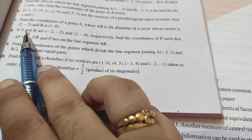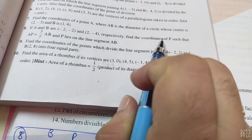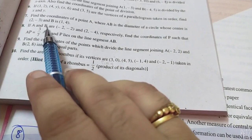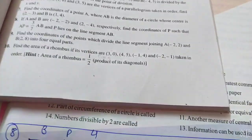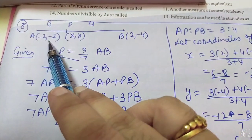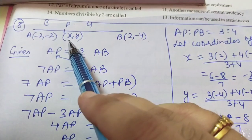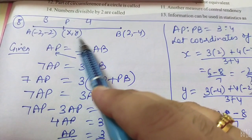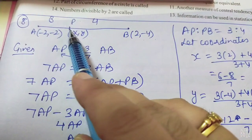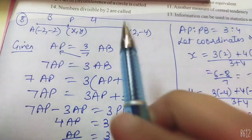Next है 8th question. 8th question में given है: आपको AB दो points हैं जिनके coordinates given हैं A(-2, -2) और B(2, -4), और बीच में point P है जिसके coordinates निकालने हैं. Given है AP = (3/7) AB. ये थोड़ा different question है. पहले diagram लगा लिया. अब मुझे चाहिए AP:PB का ratio, AB नहीं चाहिए — AB को खत्म करती हूँ.